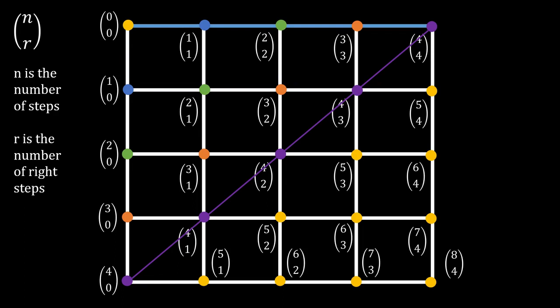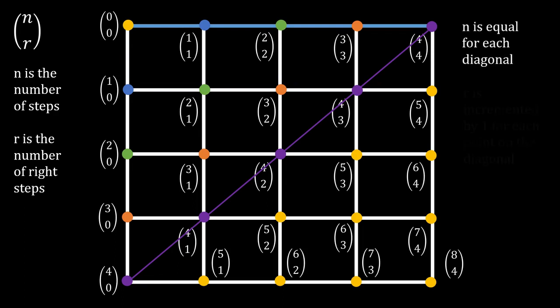So, we see that throughout the diagonal, the number of steps stays constant. And that is why the n stays at 4. And notice that moving along the diagonal, the right steps also increment by 1, because we're taking one more right step at each point.